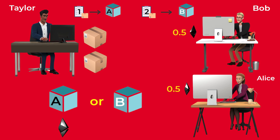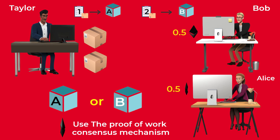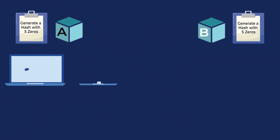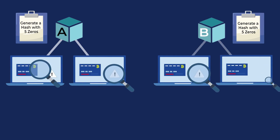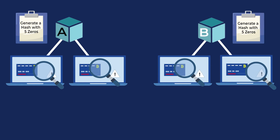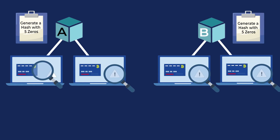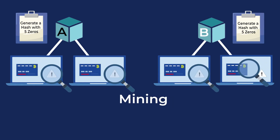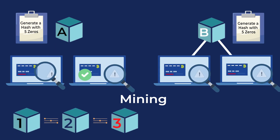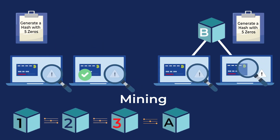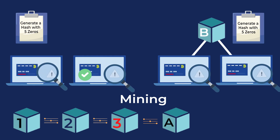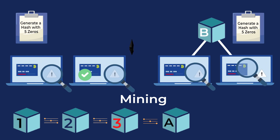The Ethereum network currently solves this problem by using the proof-of-work consensus mechanism. In this system, each block of transactions has a complex mathematical problem attached to it, and all computers on the network race to solve this problem. This process is called mining. The block that gets solved first is confirmed and added to the blockchain, with all transactions in this block approved. The computer that first solved this block gets rewarded with Ethereum.